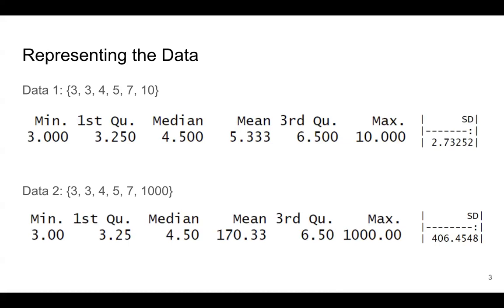So do you think the mean of 170 and the standard deviation of 406 represent data two? I don't think so. Why is that? Well, obviously because that 1,000 is something called an outlier. And let's take a look at that outlier in terms of a distribution point of view.